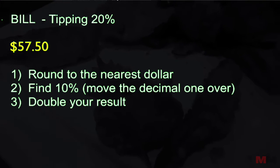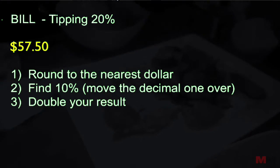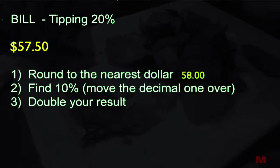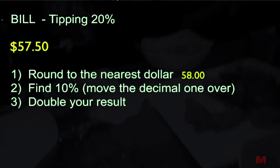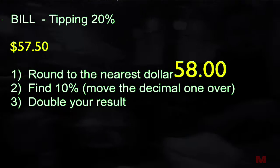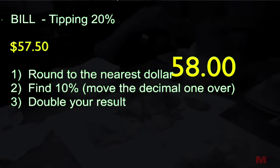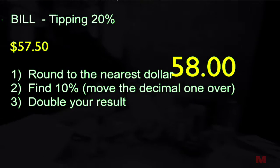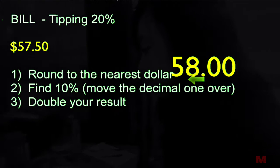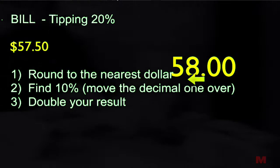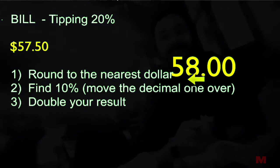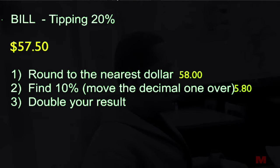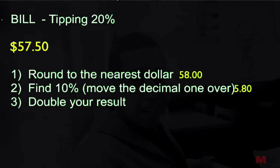First step: round to the nearest dollar so we have easy numbers to work with. So we round $57.50 to $58. Second step: find 10% of that number. To find 10% of a number, all you have to do is take the decimal place and move it one place to the left. 10% of 58 is just $5.80.